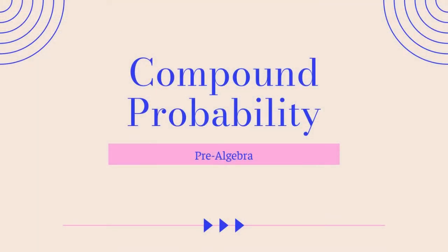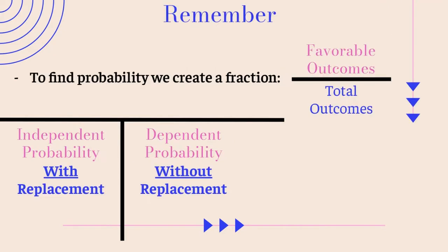Welcome back. Today we're going to be talking about compound probability. Let's get started by looking at some things to remember. To find probability, we create a fraction of favorable outcomes over total outcomes. Independent probability is when we're talking about with replacement, and dependent probability is without replacement.